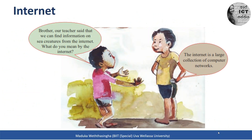Let's start with a little conversation from your reading book. There is an elder brother and a younger brother. The younger brother says: 'Brother, our teacher said that we can find information on sea creatures from the internet. What do you mean by the internet?' The elder brother answers: 'The internet is a large collection of computer networks.'